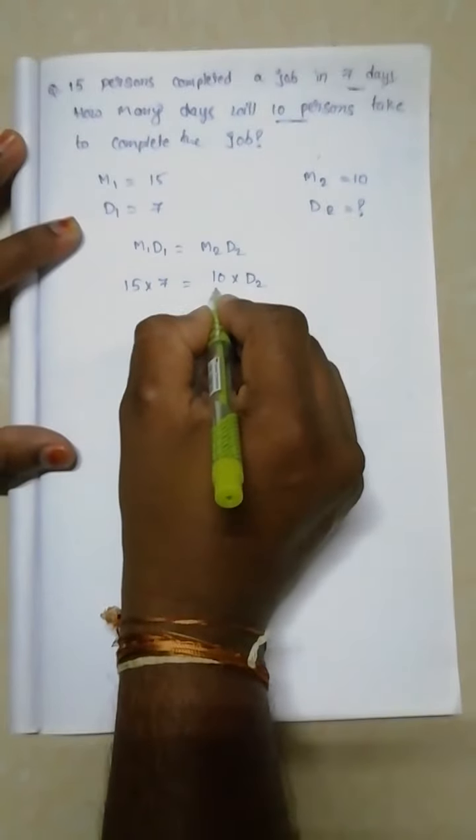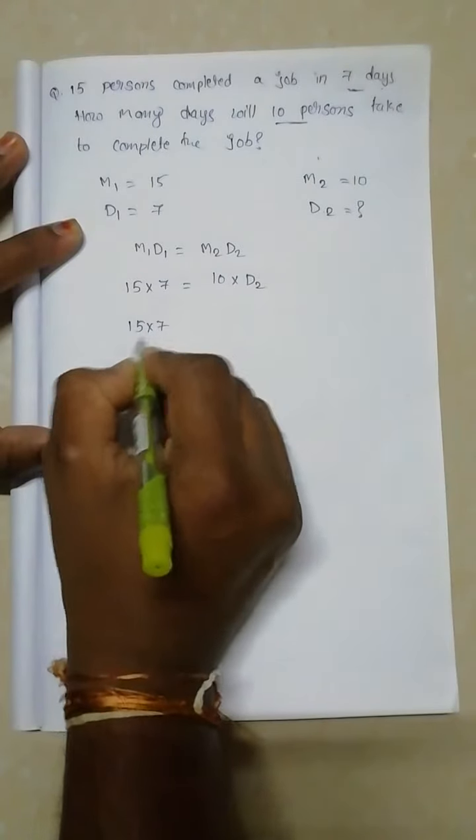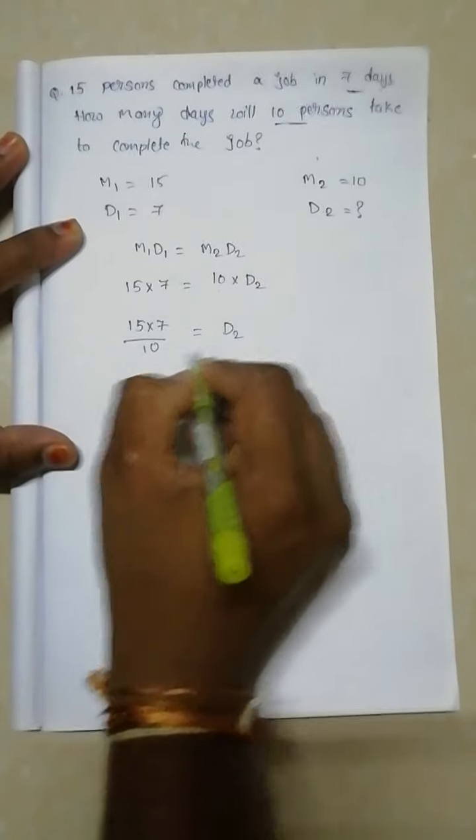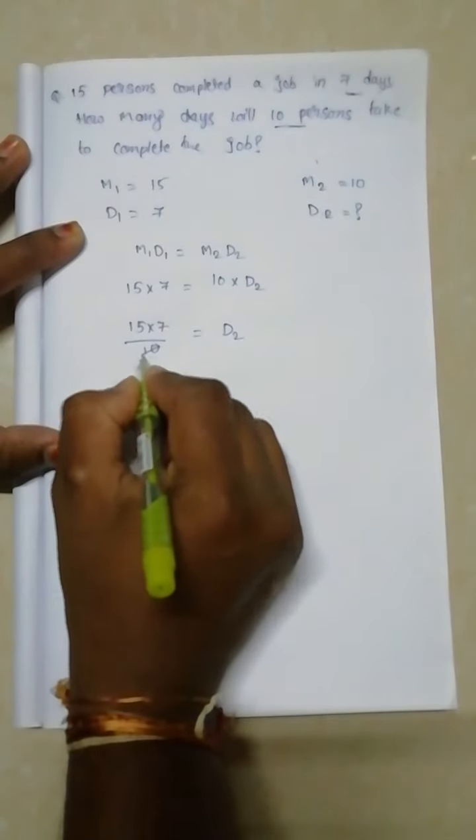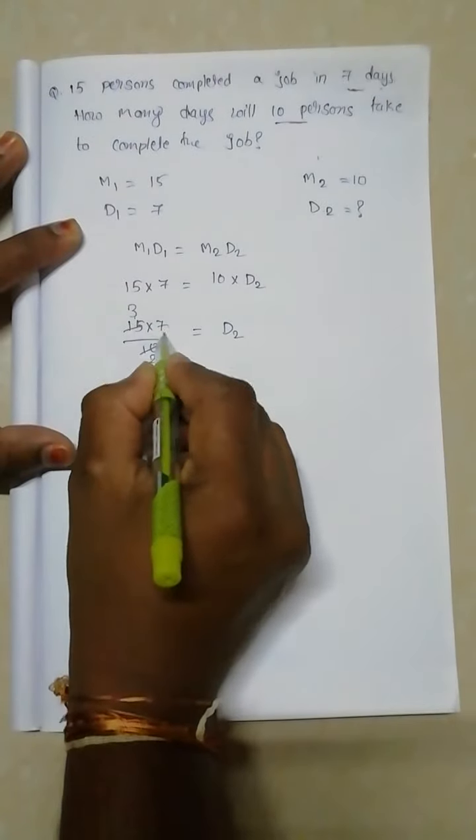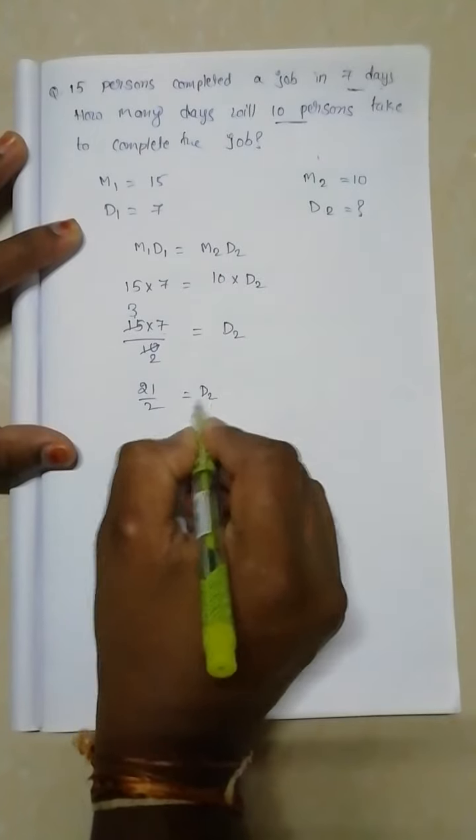Transporting this 10 to the other side, you get 15 into 7 by 10, which is equal to D2. Now simplifying: 5 twos, 5 threes, 3 sevens... 21 by 2 is equal to D2.